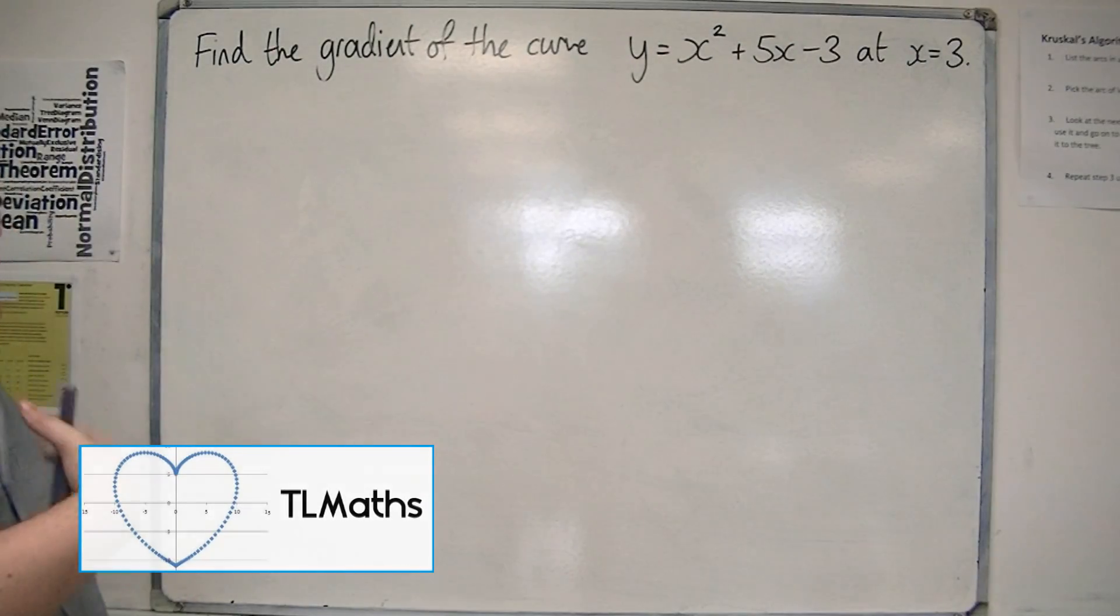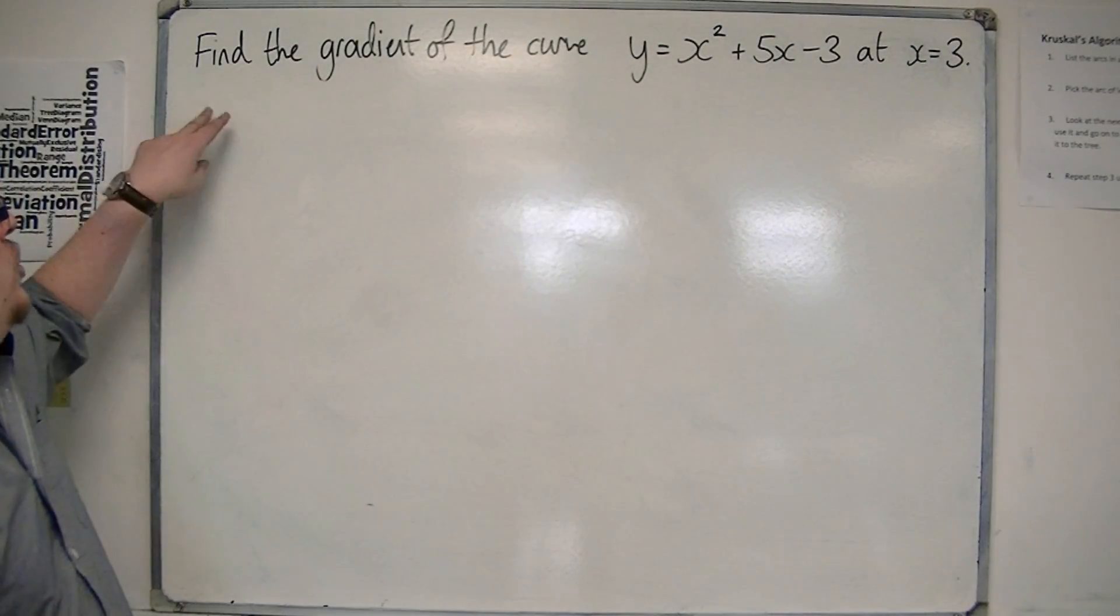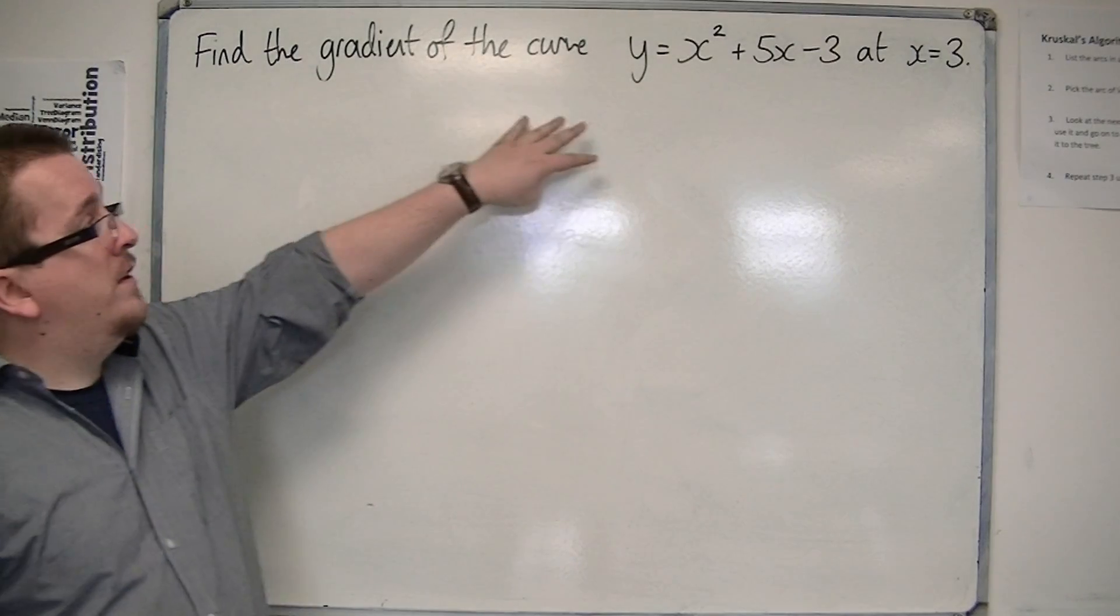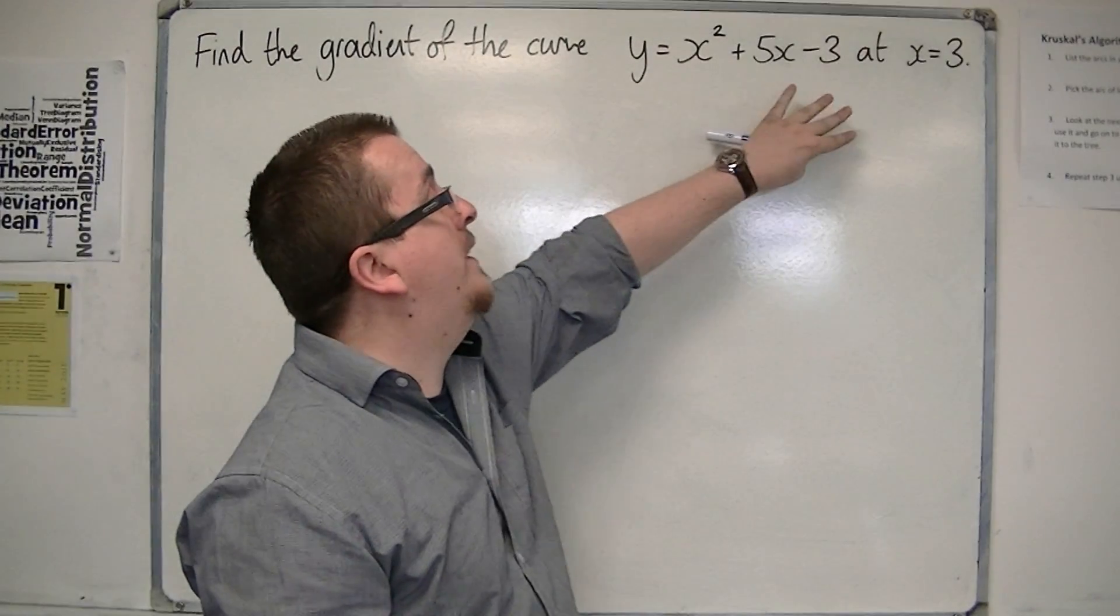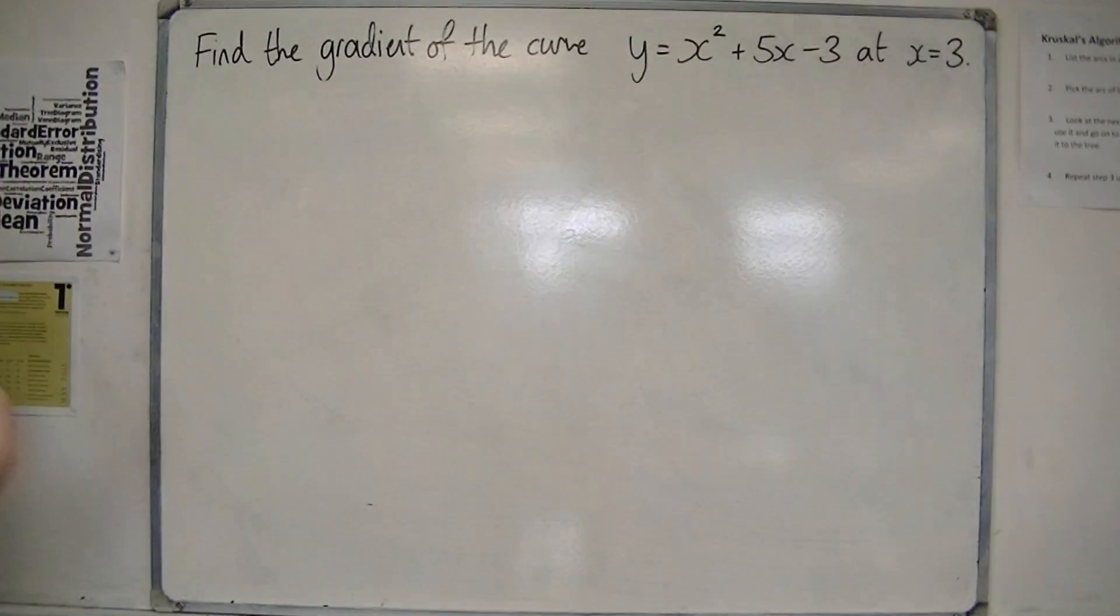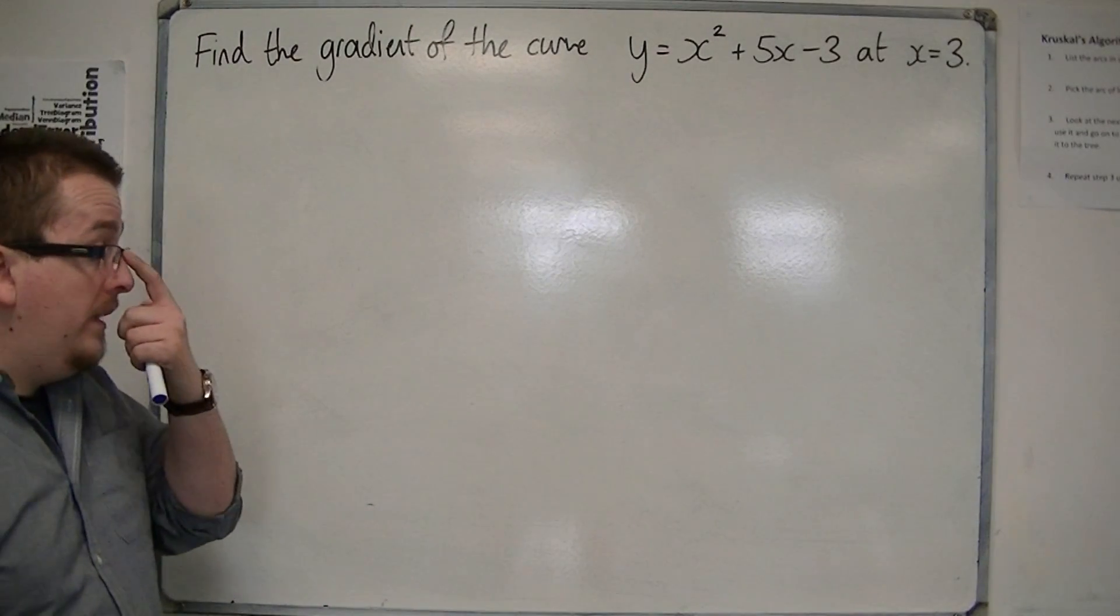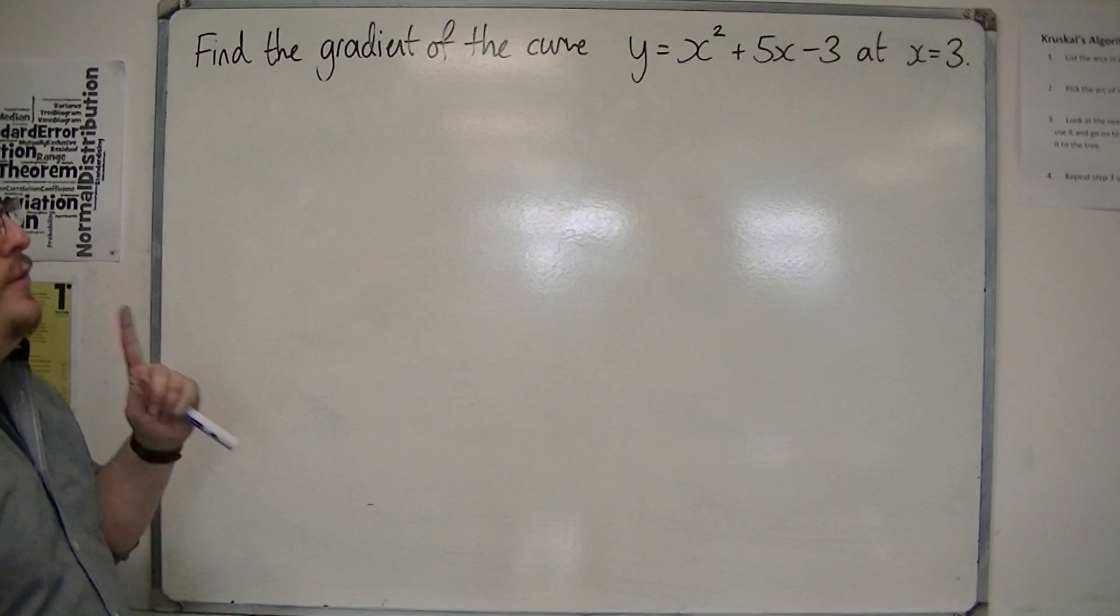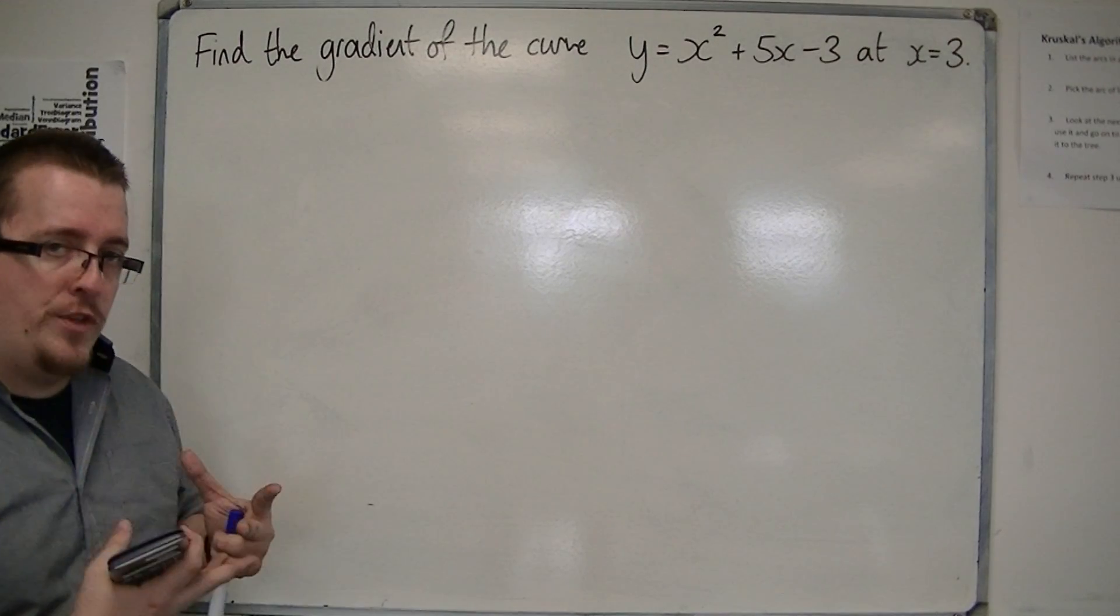Okay, so what we want to do in this video is show how we can find the gradient of the curve y equals x squared plus 5x minus 3 at x equals 3 using the method of first principles. So this problem is often going to be split up into two or three sections.